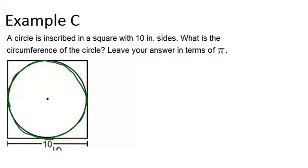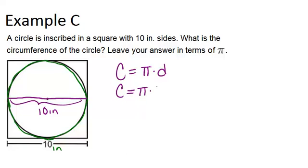Which means that for the circle, the diameter is 10 inches as well, because that's just the length across the square. So since circumference is pi times diameter, that means that our circumference here is pi times 10.